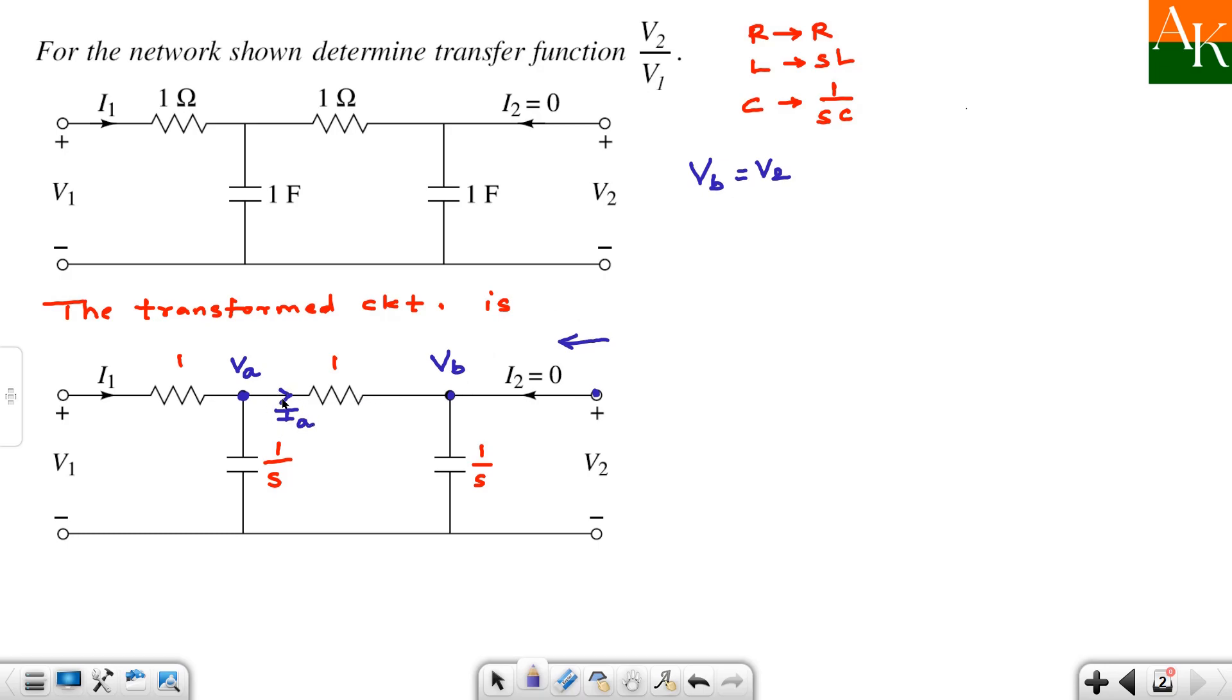Now, we have to write down about Ia. Ia will arrive at this junction and it will get split into two parts, but the right side part is 0. So, here entire Ia will flow through this capacitor and you can write down about Ia as this voltage divided by impedance. The impedance here is 1 by S. So, that will go in the denominator. So, this will become S times Vb or you can write down S times V2.